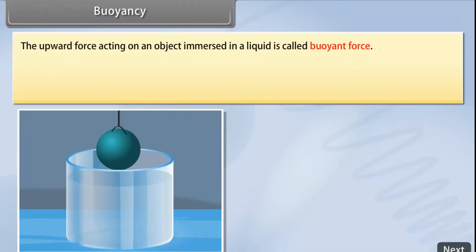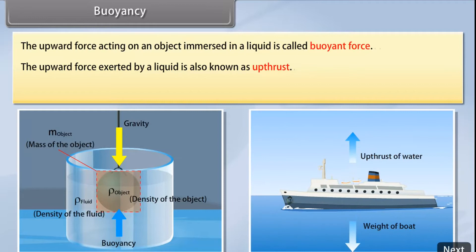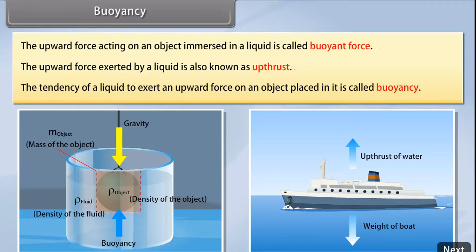The upward force acting on an object immersed in a liquid is called buoyant force. The upward force exerted by a liquid is also known as up thrust. The tendency of a liquid to exert an upward force on an object placed in it is called buoyancy.